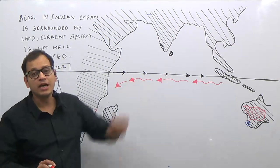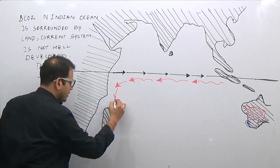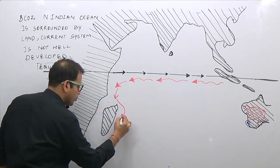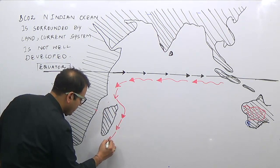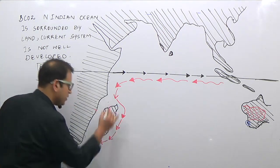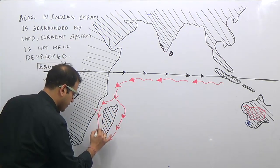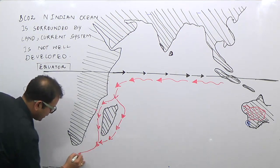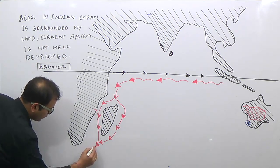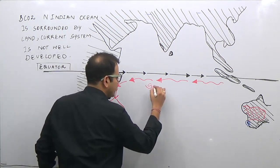The South Equatorial Current water comes and is bifurcated — one part goes to the eastern side of an island, which is Madagascar, and one goes through the inside of the region between the island of Madagascar and the African mainland. After that, both these ocean currents join and together they flow downwards. This is the South Equatorial Current.